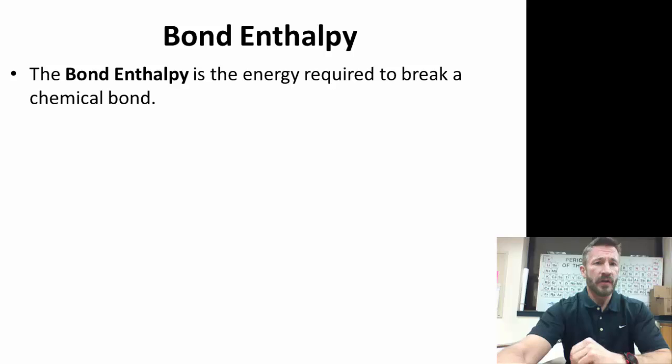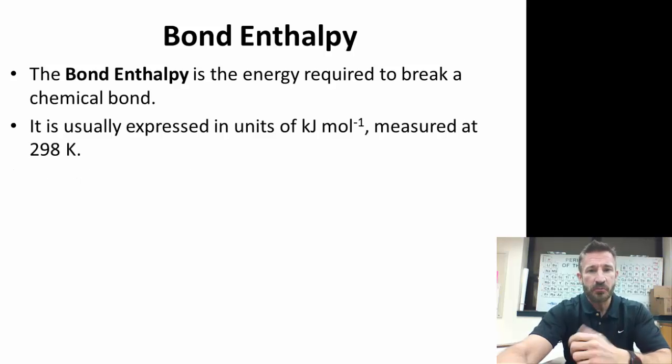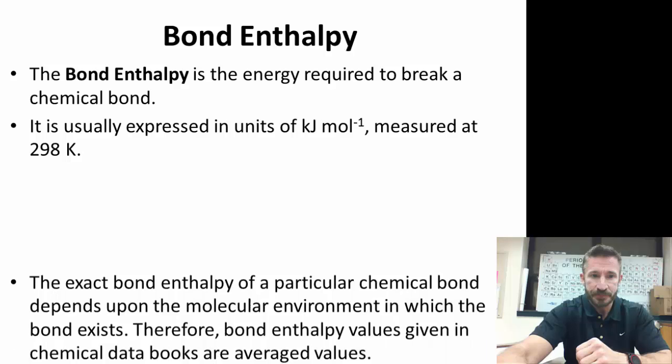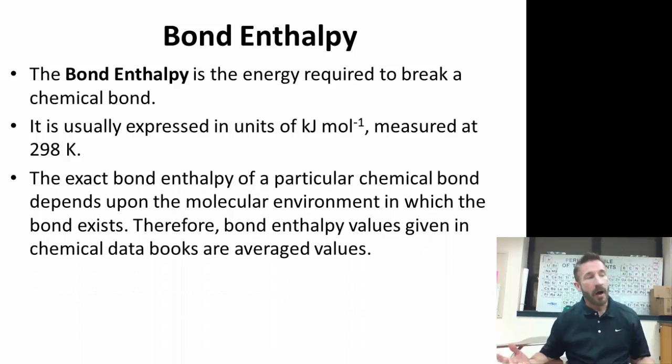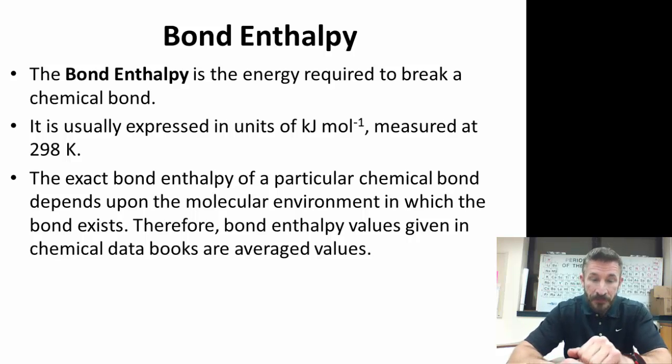Bond enthalpy. The bond enthalpy is an energy change or the energy that's required to break a chemical bond. It's usually expressed in kilojoules per mole and the tables are done at 298K. The exact amount of bond energy depends on the chemical bond and the environment in which the bond exists. Therefore, when you look at the tables, the numbers you're going to see are just the average values.